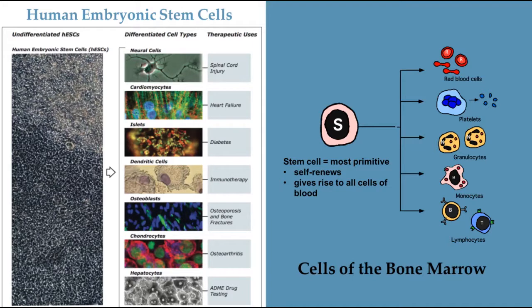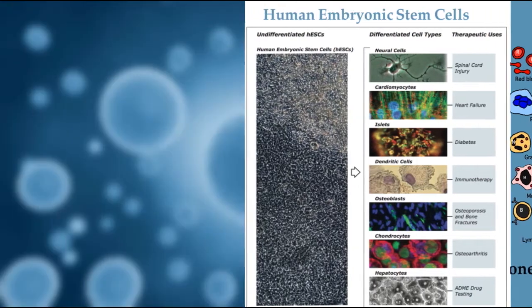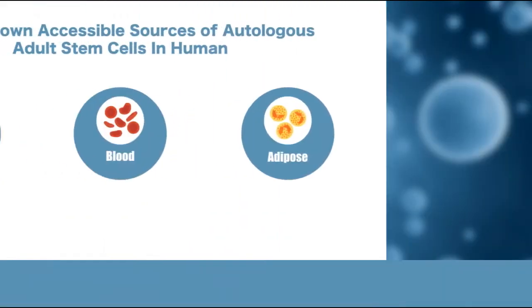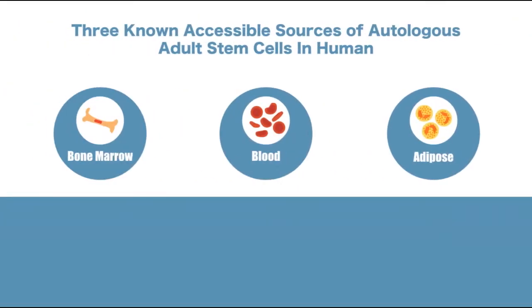In mammals, there are two broad types of stem cells: adult stem cells and embryonic stem cells. There are three known accessible sources of autologous adult stem cells in humans.